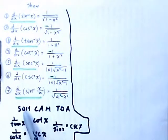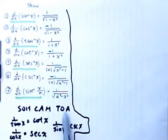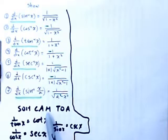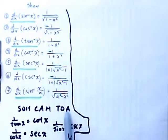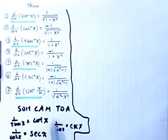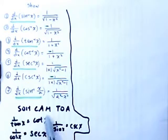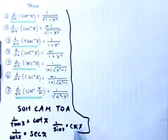The first thing you have to know is SOHCAHTOA. The sine of the angle is equal to opposite over hypotenuse. Cosine of the angle is equal to the adjacent side over the hypotenuse. Tangent of the angle is equal to the opposite side over the adjacent side — it's the ratio of opposite to adjacent. One over tangent is cotangent; these are reciprocal functions. One over the sine is the cosecant, and the sine equals one over cosecant of x. So let's get started.